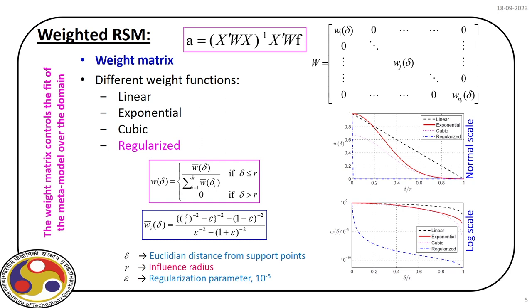In the next lecture we will combine moving least square with orthogonal polynomials to develop an adaptive (or sequential) stochastic response surface, which will improve the quality of the reliability analysis results. With that, our discussion on MLS closes here. Thank you very much.